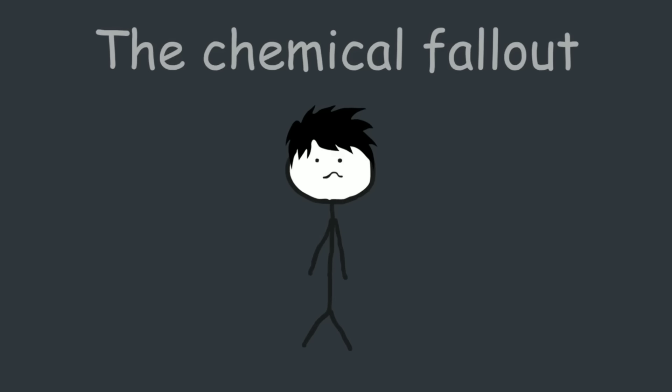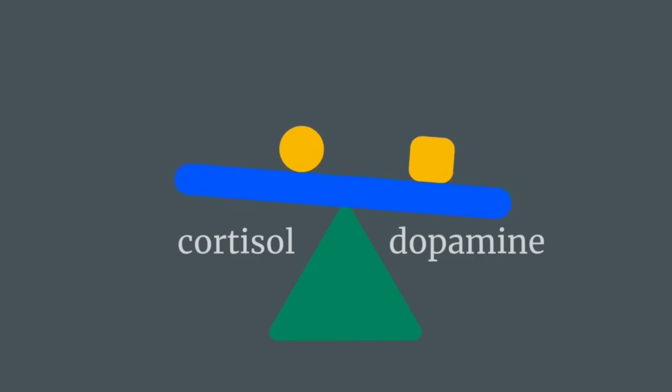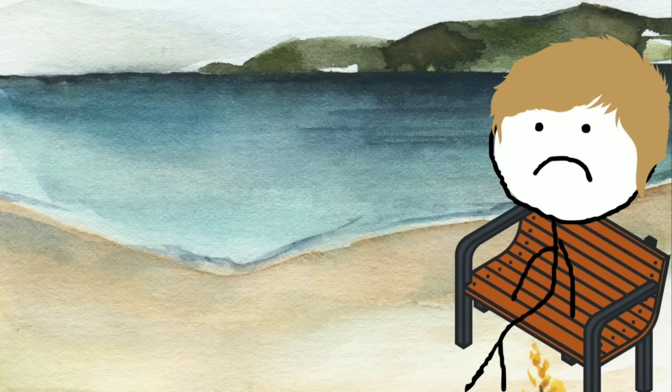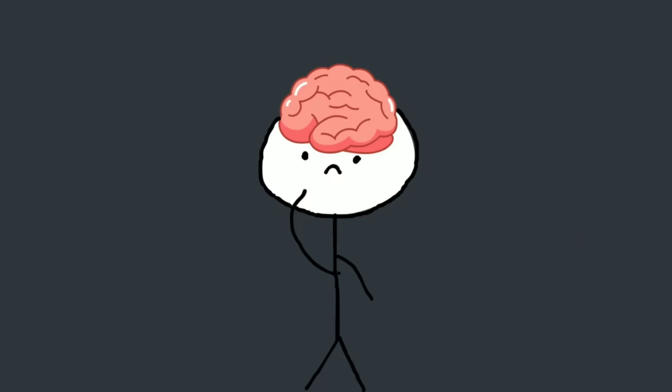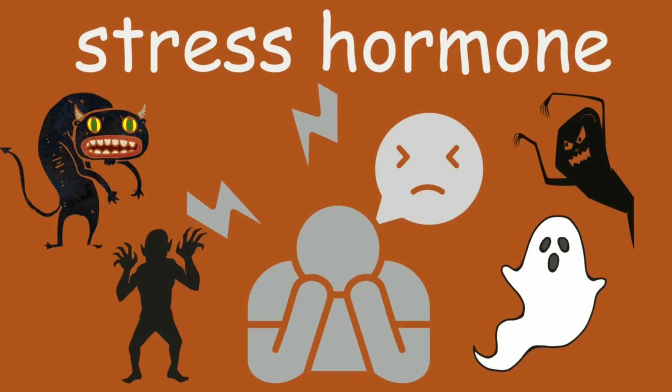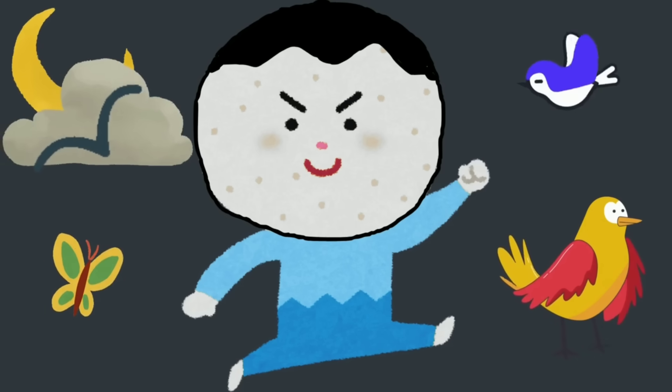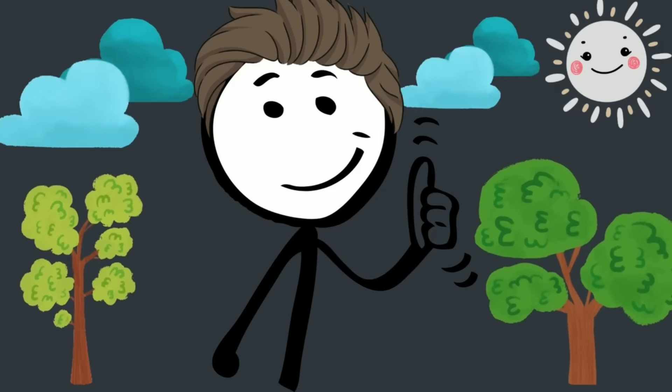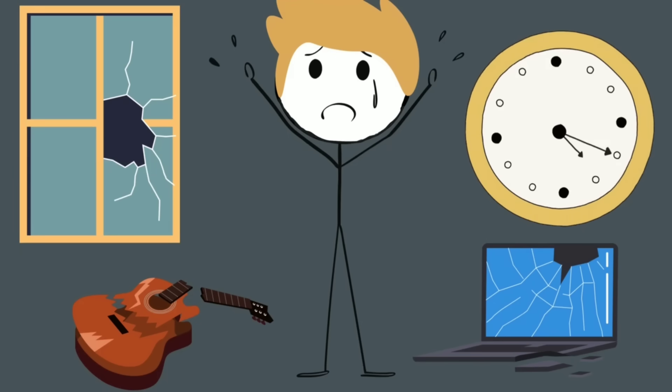Number two, the chemical fallout: cortisol and dopamine imbalance. Loneliness doesn't just feel bad, it biochemically damages you. When your brain enters survival mode due to social isolation, it starts flooding your system with cortisol, the stress hormone. At first, cortisol is helpful. It gives you energy and alertness. But when it's constantly elevated, it starts to wreck everything.